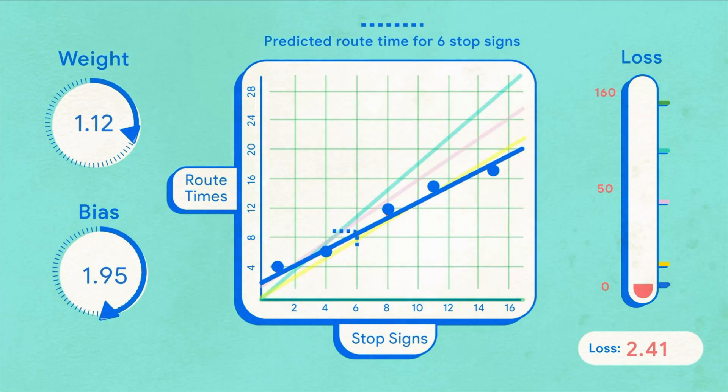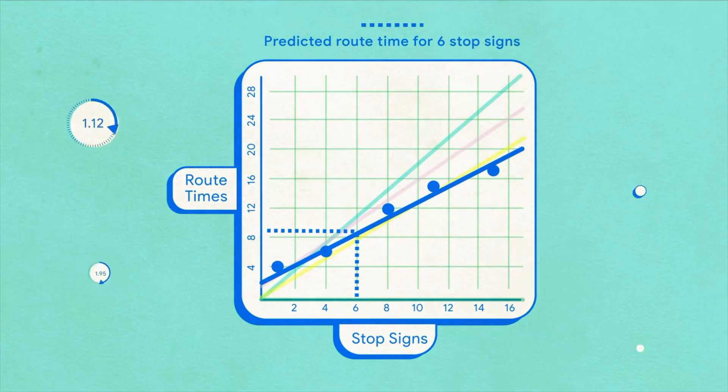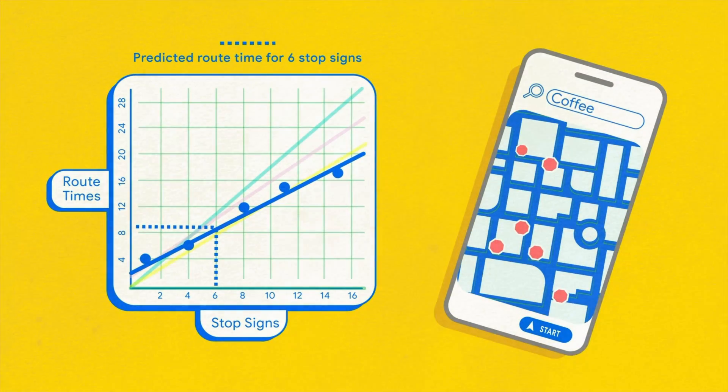This far in the course, we've focused on building models that output a numerical prediction. For example, the amount of time it takes to drive to your destination.